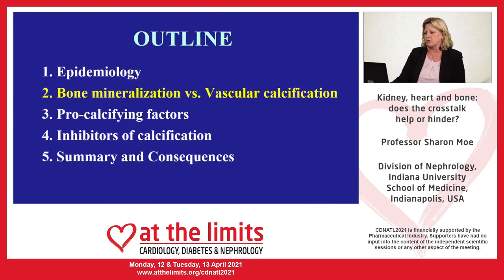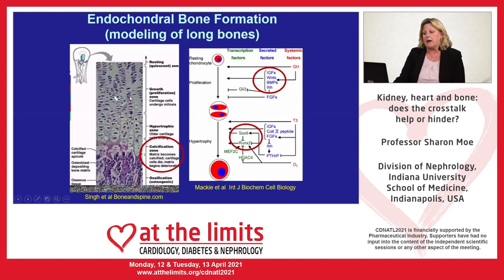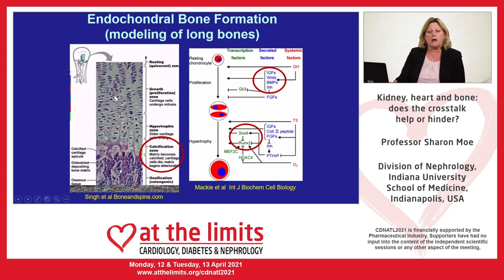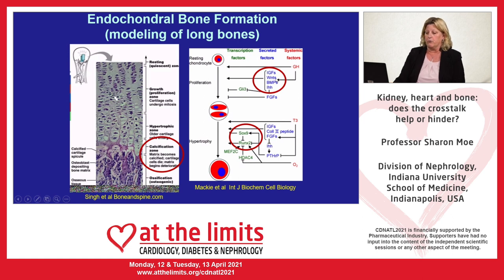There are many types of bone formation. One is called endochondral — this is how long bones form — where cartilage cells go from a resting state to proliferation and hypertrophy. Those cells then lay down mineral and matrix and become calcified. The signaling for these chondrocytes is in part through Wnt signaling, which is inhibited by sclerostin, and also through upregulation of a transcription factor called RUNX2.